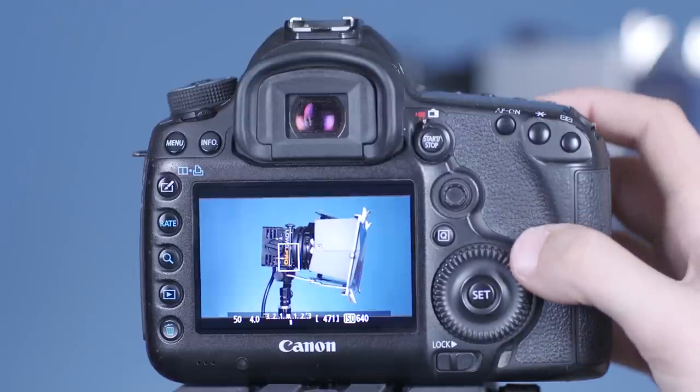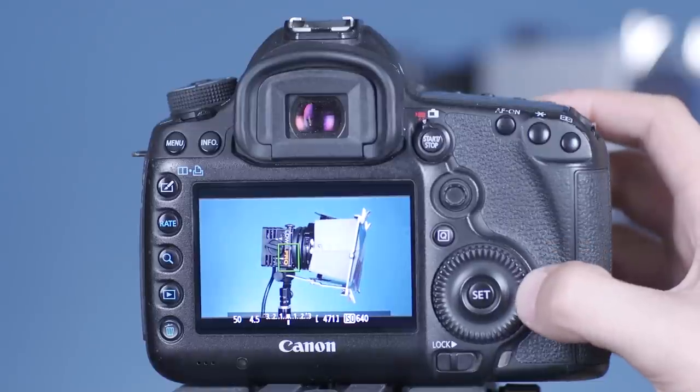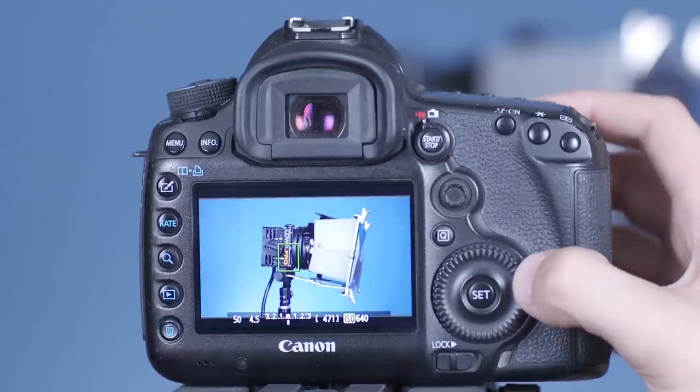If the meter's in the middle, your camera thinks it is properly exposed. Too far to the right, and your image is overexposed. Too far to the left, and it's underexposed.